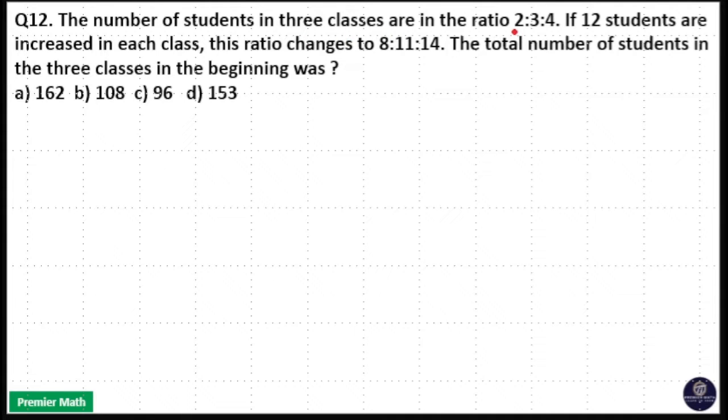The number of students in three classes are in the ratio 2:3:4. If 12 students are increased in each class, this ratio changes to 8:11:14. The total number of students in the three classes in the beginning was?